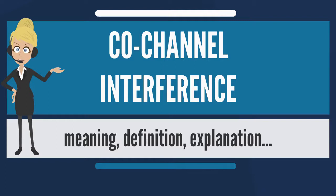Adverse weather conditions: During periods of uniquely high-pressure weather, VHF signals which would normally exit through the atmosphere can instead be reflected by the troposphere. This tropospheric ducting causes a signal to travel much further than intended, often causing interference to local transmitters in the areas affected by the increased range of the distant transmitter.